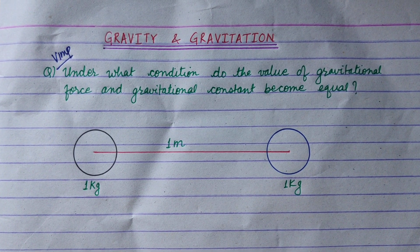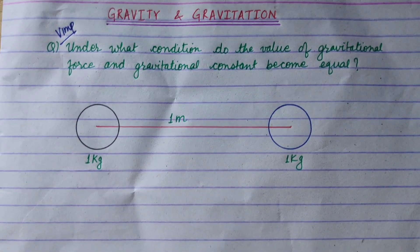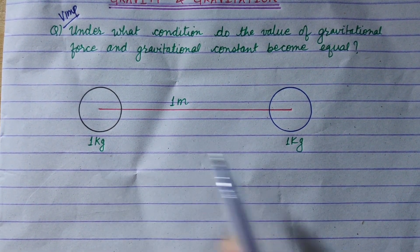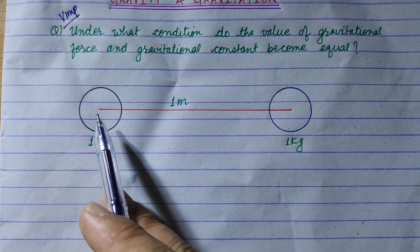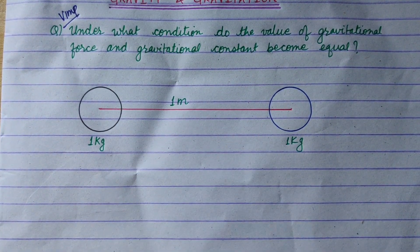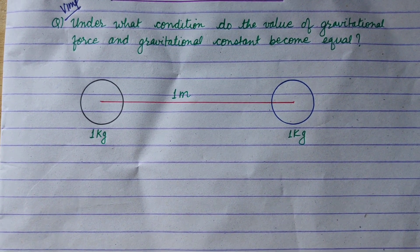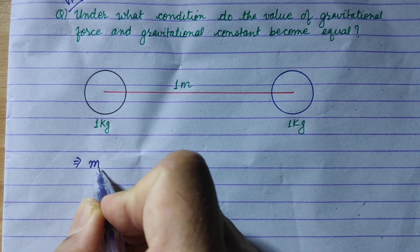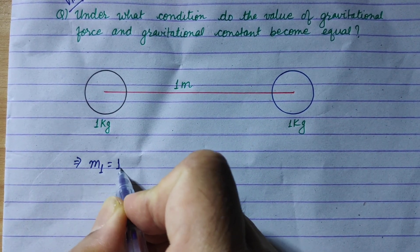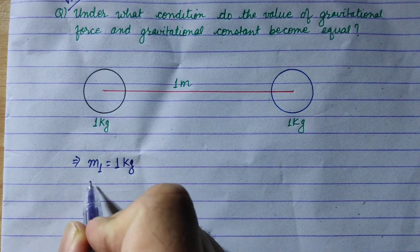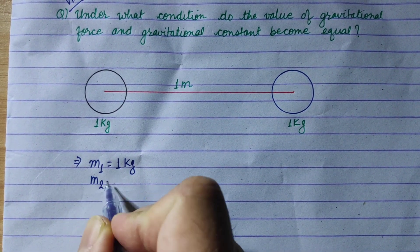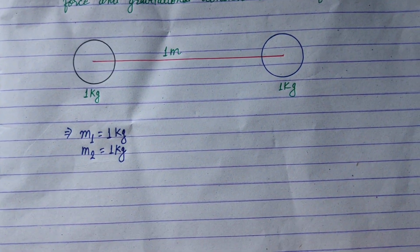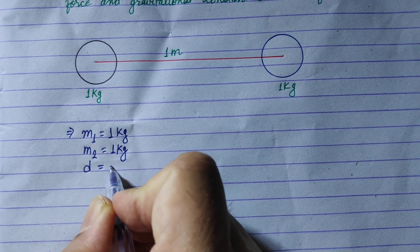If you want to take a look at the diagram, suppose that mass 1 is equal to 1 kg, mass 2 is equal to 1 kg, and the center-to-center distance is equal to 1 meter.